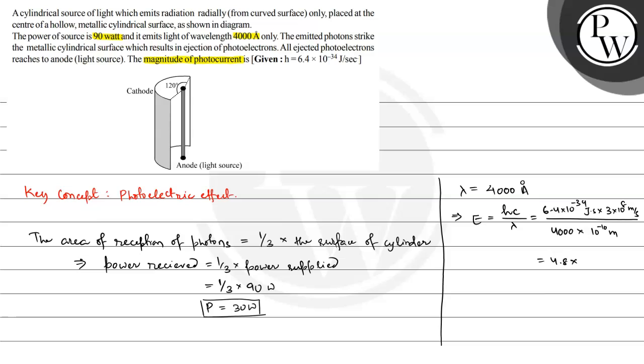So this value is 4.8 multiplied by 10 raised to the power minus 19 joules. So this is energy of one photon. So this is for one photon. Now